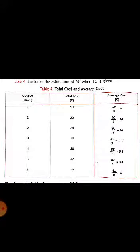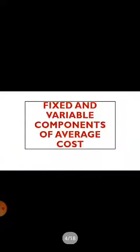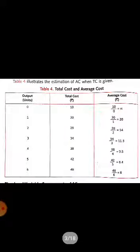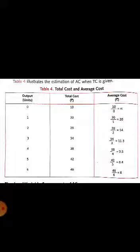We can understand average cost through an illustration. Output and total cost are both given, and we need to divide total cost by output, as shown in the formula. At zero level of output, if we divide 10 by 0, we get infinity as the average cost — this is a mathematical law. At one unit of output, if we divide 20 by 1, we get 20 as average cost.